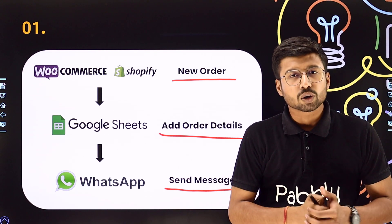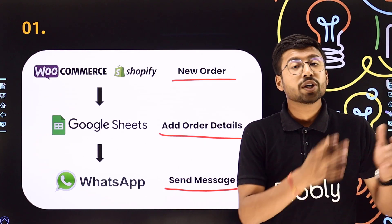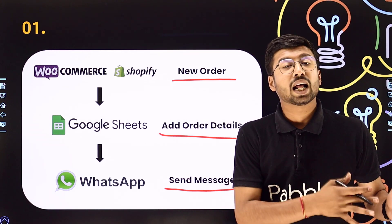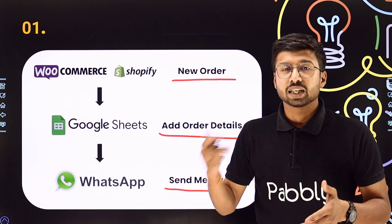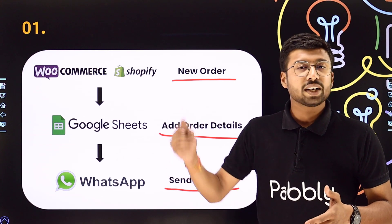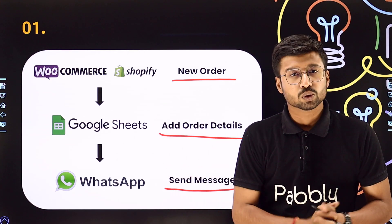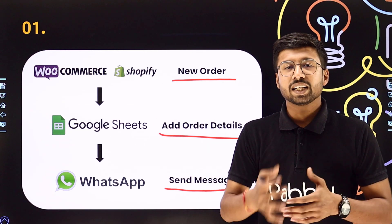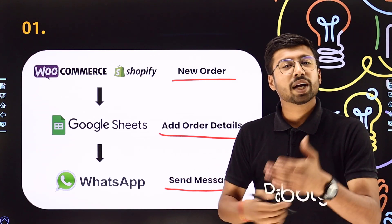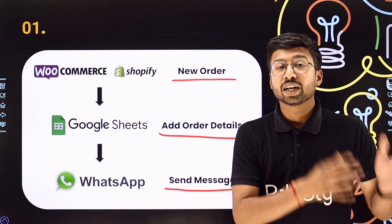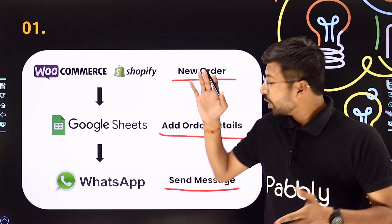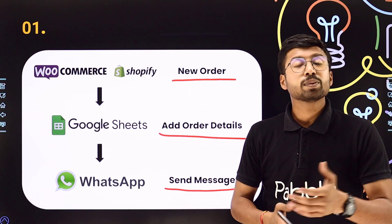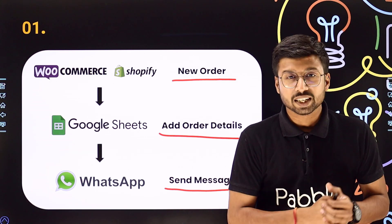In this same automation, if you want, you can add your CRM platform and add that customer as a lead or as a contact in your CRM too. Or if you want to update your team members on Slack, Telegram, Discord or any other platform regarding the new order, you can add that as well. The possibilities are endless.